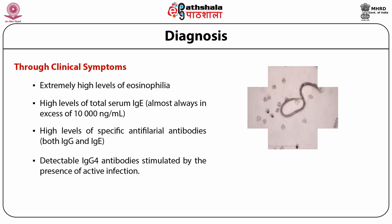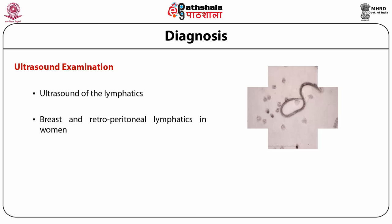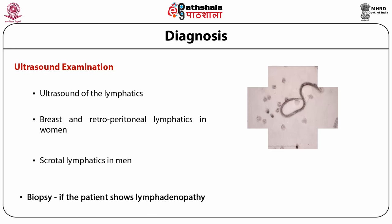Diagnosis of lymphatic filarial infection using conventional X-ray is rarely helpful due to detectable changes in organs. However, in tropical eosinophilia, characteristic interstitial thickening and diffuse nodular mottling in the lung fields can be detected by X-rays. Ultrasound examination of the lymphatics, especially breast and retroperitoneal lymphatics in women and scrotal lymphatics in men, can expose rapidly moving adult worms. Biopsy of the lymph node can detect adult worms if the patient shows lymphadenopathy, though this approach is rarely used as a diagnostic procedure.